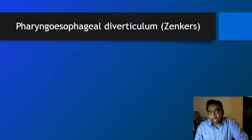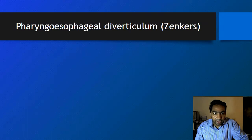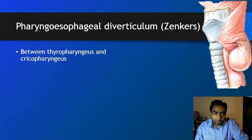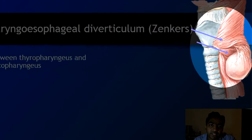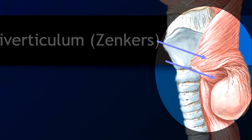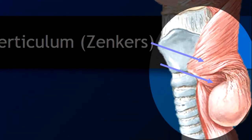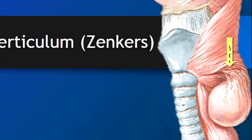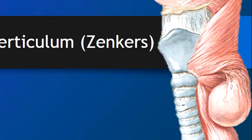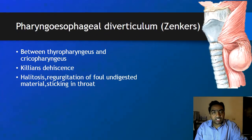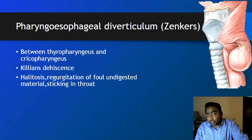The pharyngo-esophageal or Zenker's diverticulum occurs between the thyropharyngeus and the cricopharyngeus. The thyropharyngeus has oblique fibers and the cricopharyngeus has transverse fibers. The space in between is called Killian's dehiscence, and through this Killian's dehiscence, the Zenker's diverticulum forms. The patient can present with halitosis, regurgitation of foul undigested material, or a feeling of food sticking in the throat.